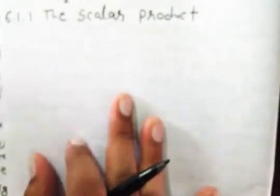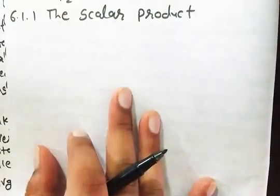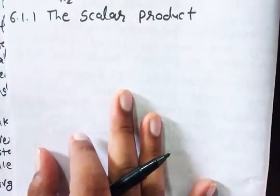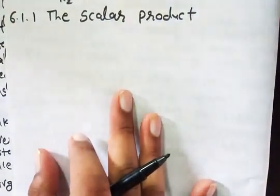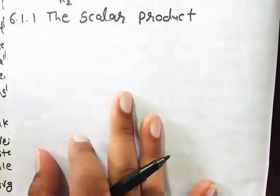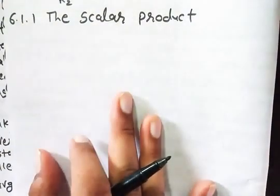So earlier we discussed these three physical quantities. First, let's talk about work. If any displacement occurs according to force, that is called work. Then talking about energy, to do the work, the capacity to do that work is called energy.